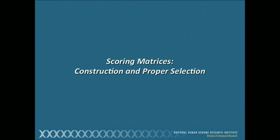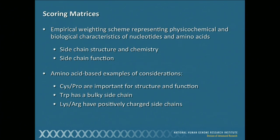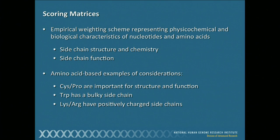Before we talk about the methods, a little bit about scoring matrices. Once we have two sequences aligned, how do we actually measure how good the alignment actually is? These scoring matrices give us a metric to assess how good these alignments are. The numbers found in these matrices represent actual biological characteristics and physical-chemical properties of nucleotides and amino acids. So these are dependent on the side chain structure and chemistry of the amino acids, their function, and take into account things like cysteines and prolines, which are obviously important for structure and function.